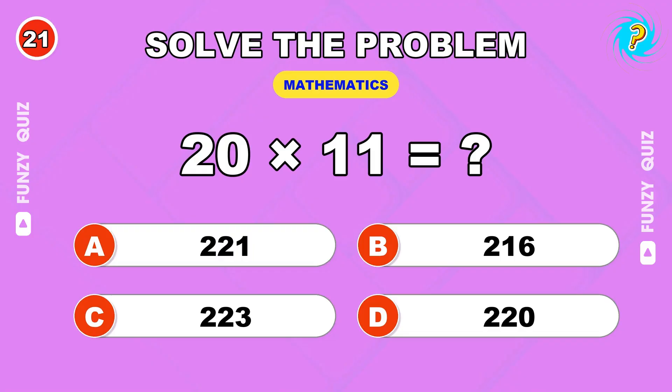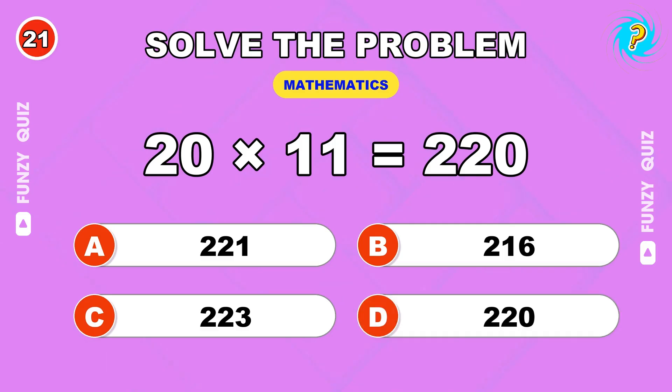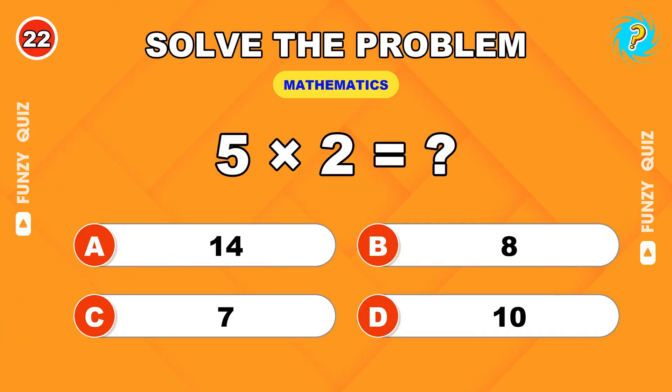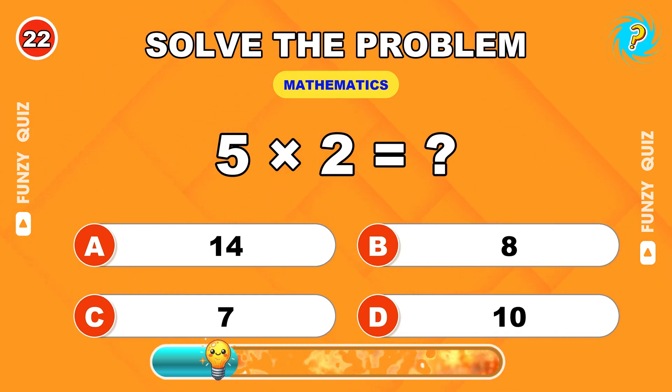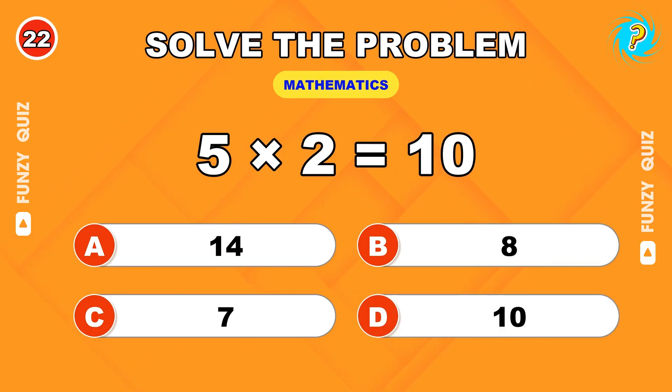Double digits ahead. 20 times 11? 220. Back to basics. 5 times 2? 10.